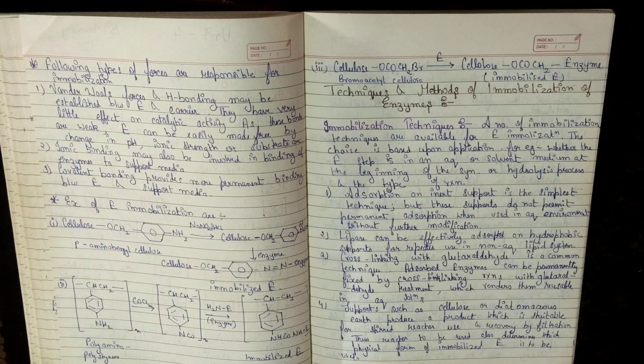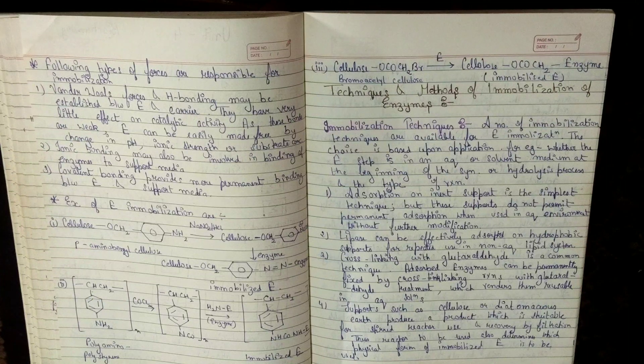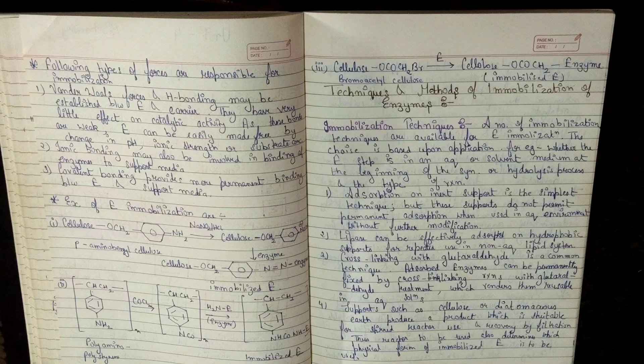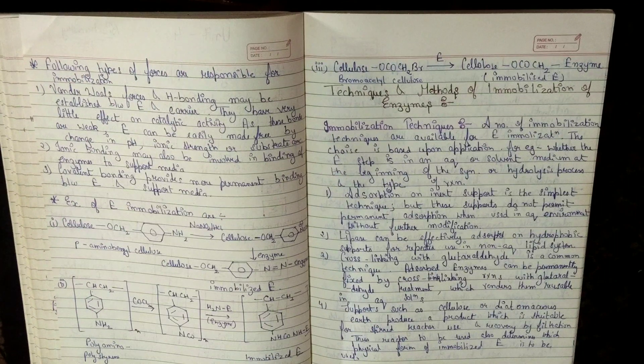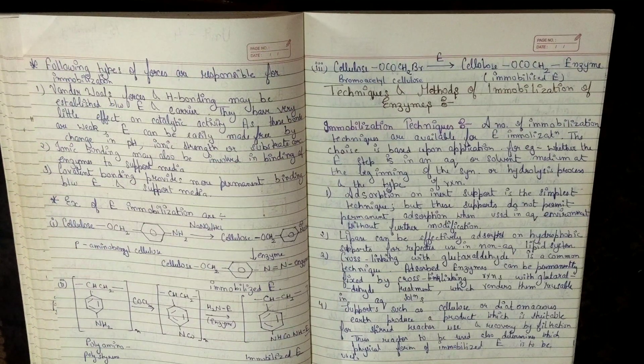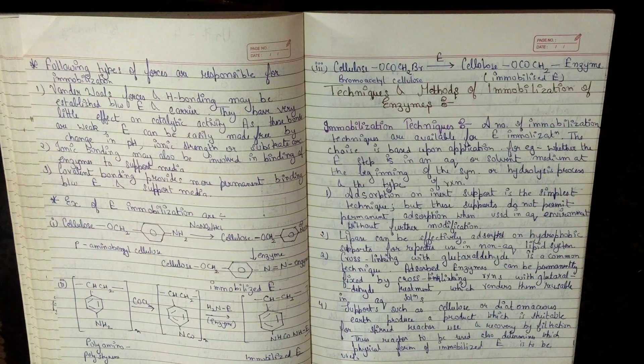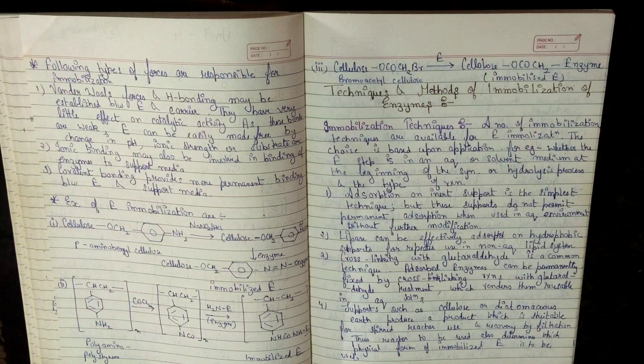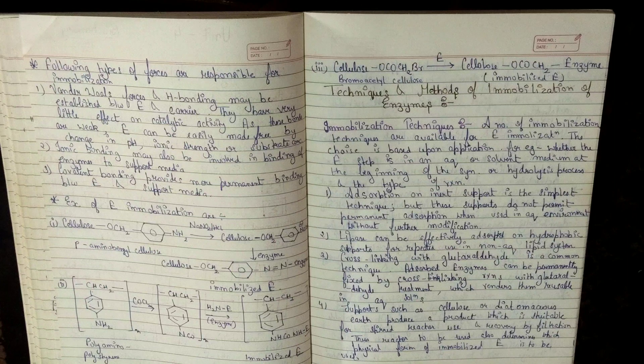Enzyme और carrier की बीच में van der Waals forces और hydrogen bonding easily established हो जाती है. यह weak forces होते हैं, इसलिए यह catalytic activity पर effect नहीं डालते हैं जादा. और हमारा enzyme भी easily free हो जाता है हमारे carrier में से. अगर हम उसका pH को change कर दे, उसकी ionic strength को change कर दे या फिर उसके substrate concentration को change कर दे.